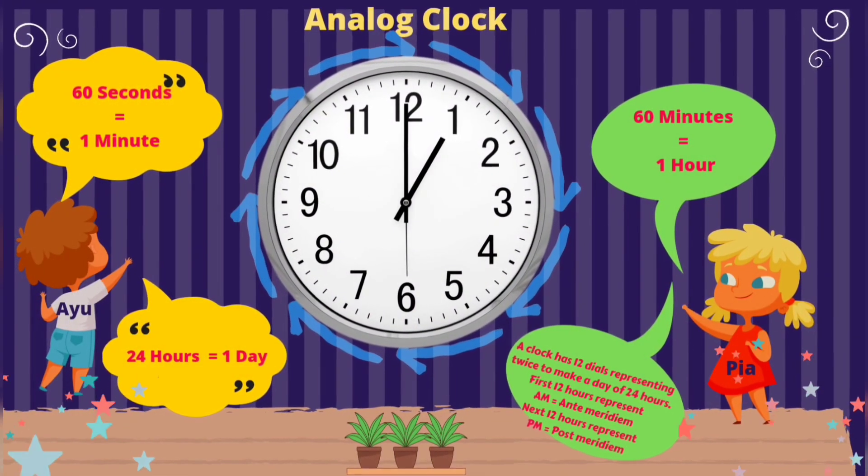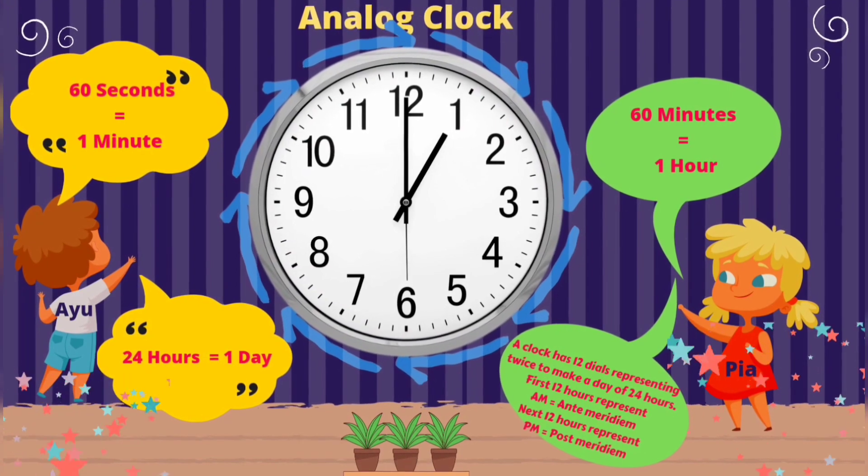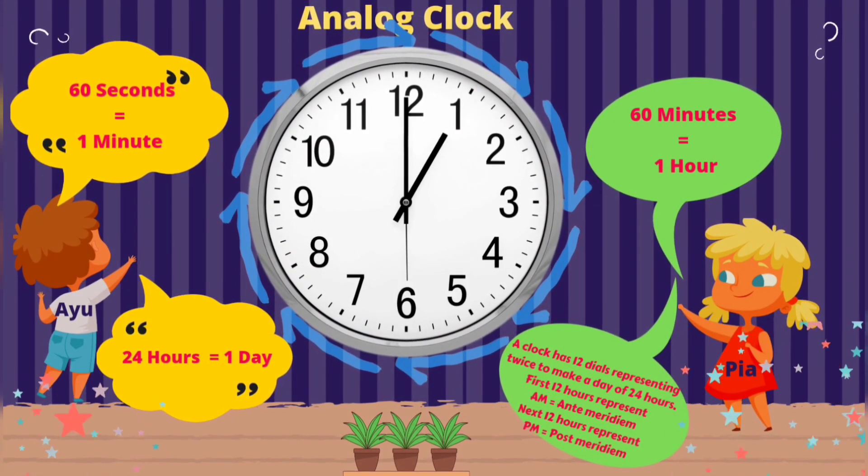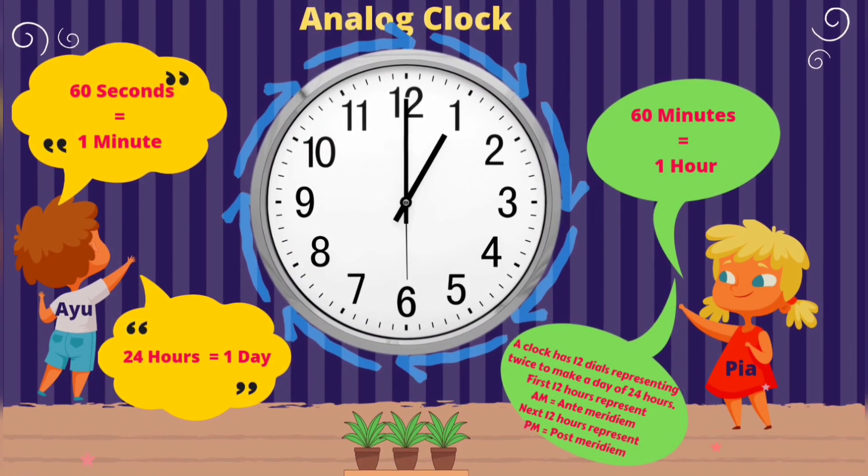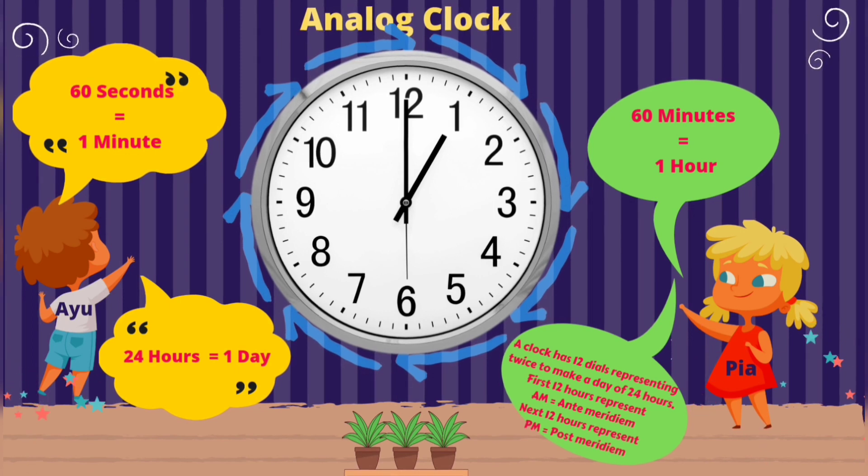60 seconds equals 1 minute. 60 minutes equals 1 hour. 24 hours equals 1 day. A clock has 12 dials representing twice to make a day of 24 hours.